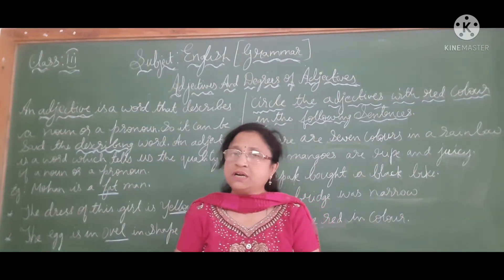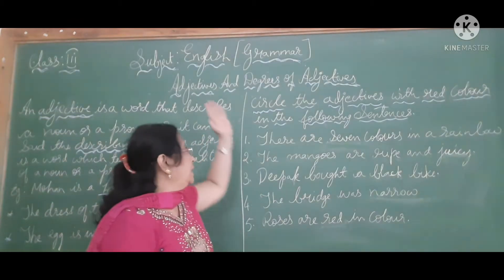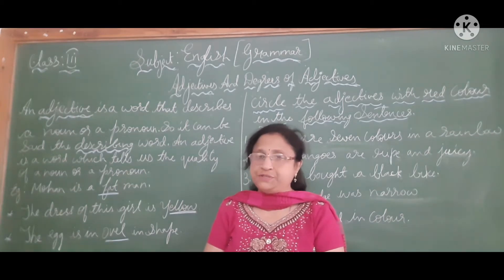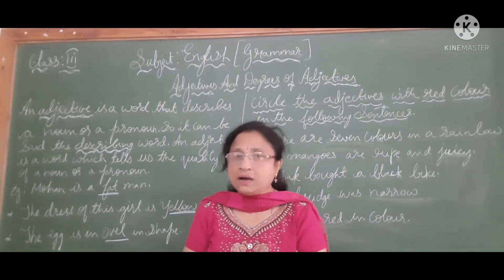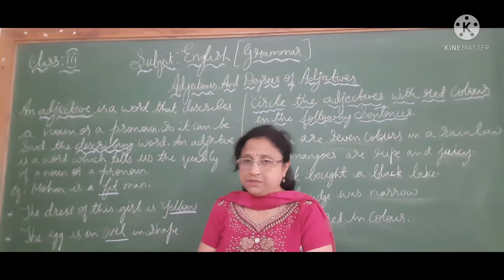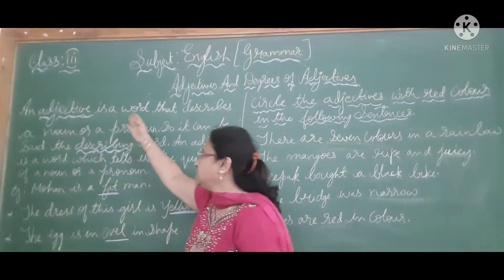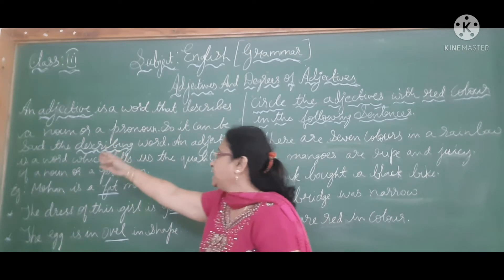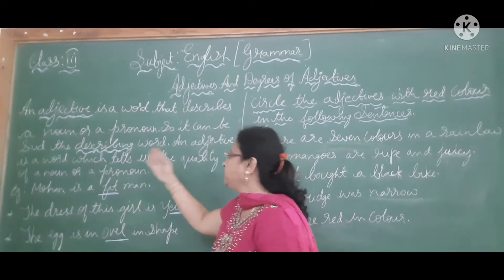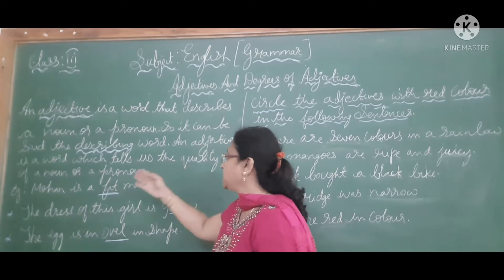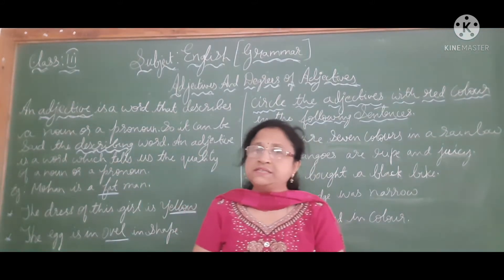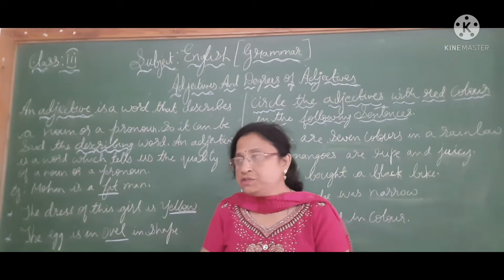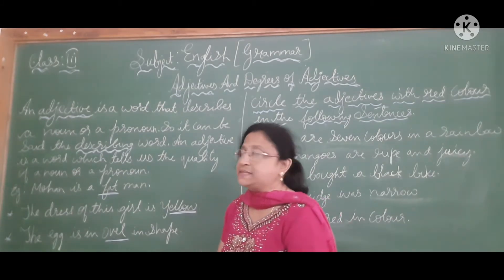Hello children, today I am going to start with another topic in grammar — adjectives and degrees of adjectives. Can anybody tell me what is an adjective? We have already studied this in a lower class. An adjective is a word that describes a noun or a pronoun. It is called the describing word. An adjective tells us the quality of a noun or a pronoun. Let us learn adjectives through examples.